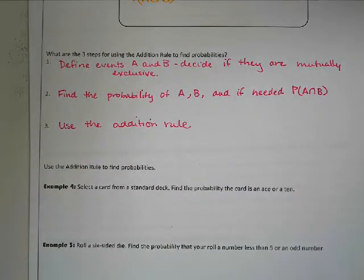So we're going to select a card from a standard deck, find the probability that the card is an ace or a 10. Now it's going to start to become really important that you pay attention because obviously today we're doing addition rule, we're just doing addition rule, and so they're all going to say or.